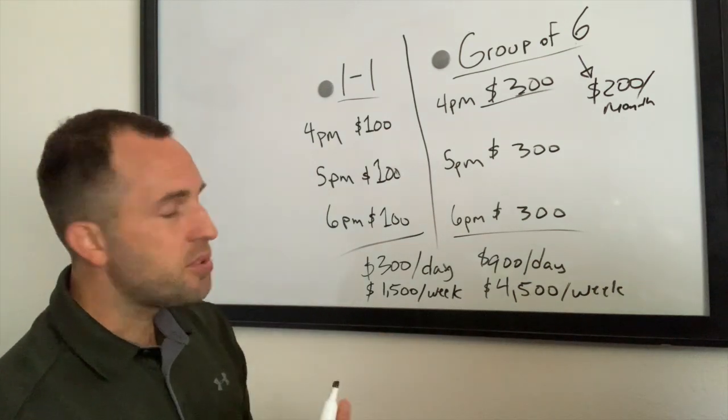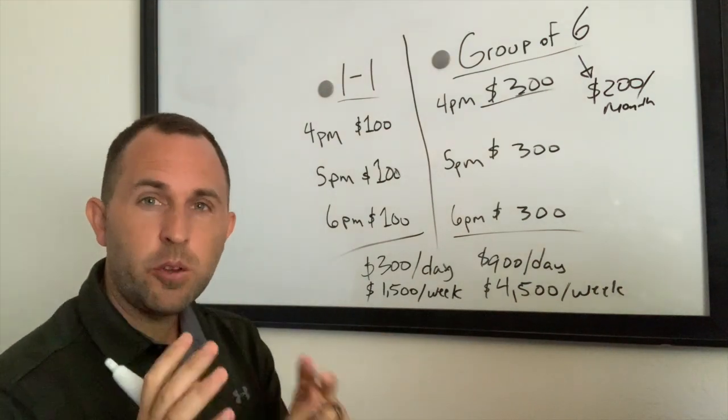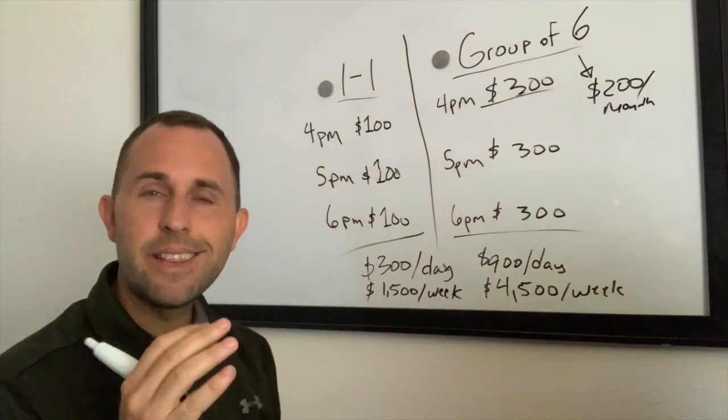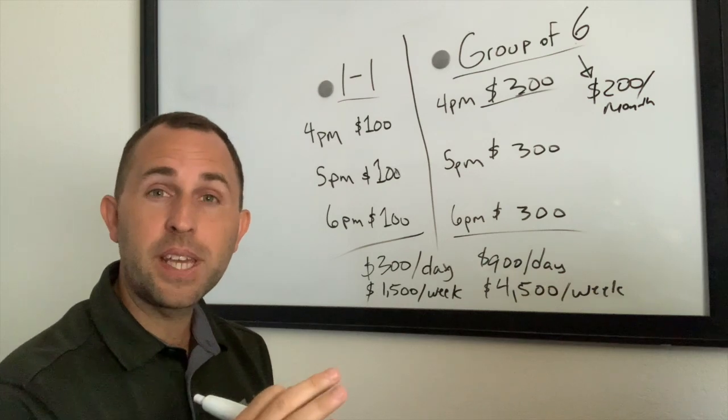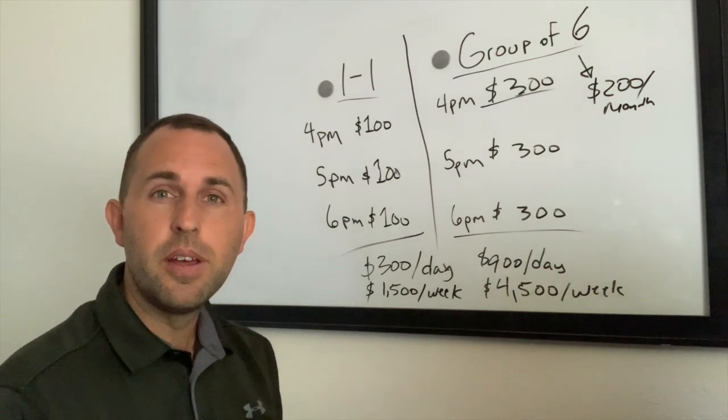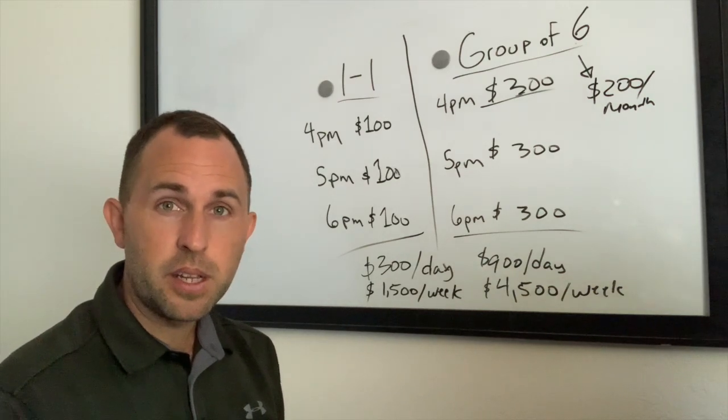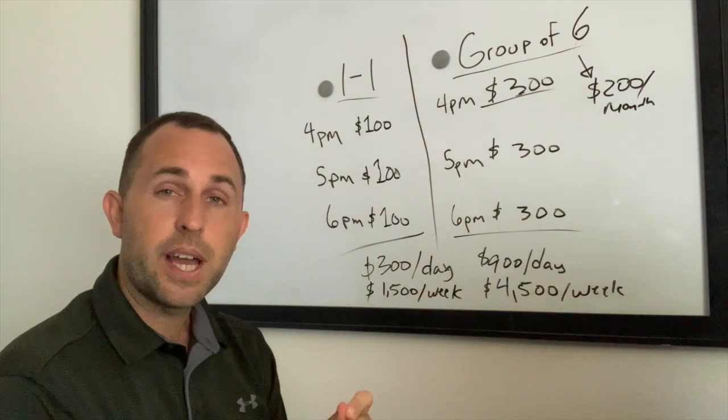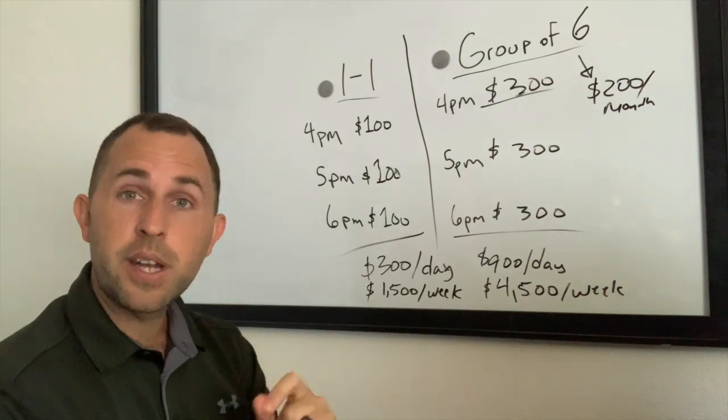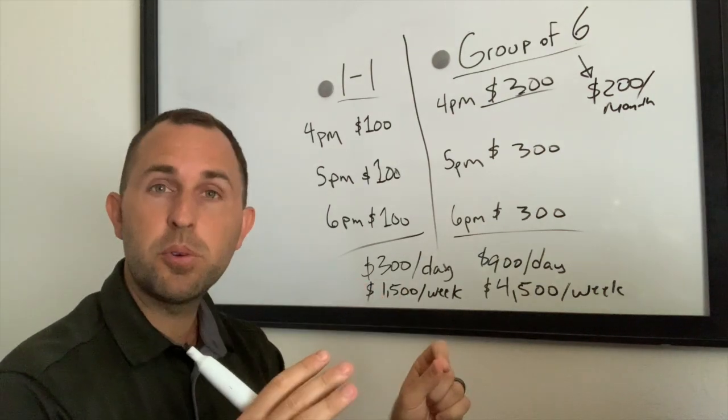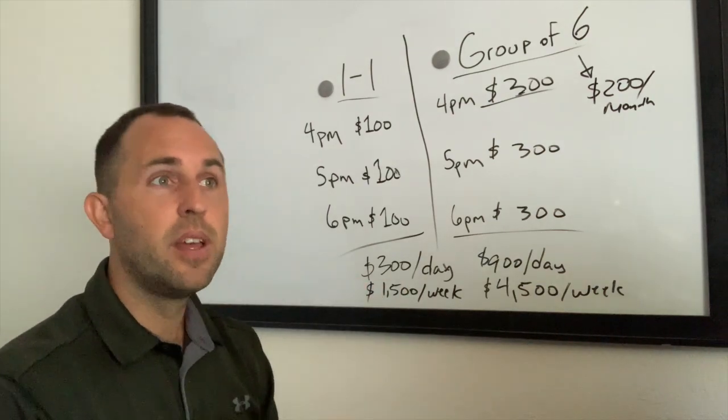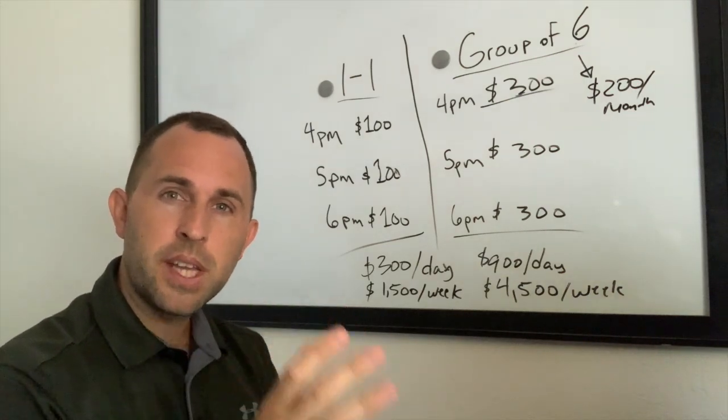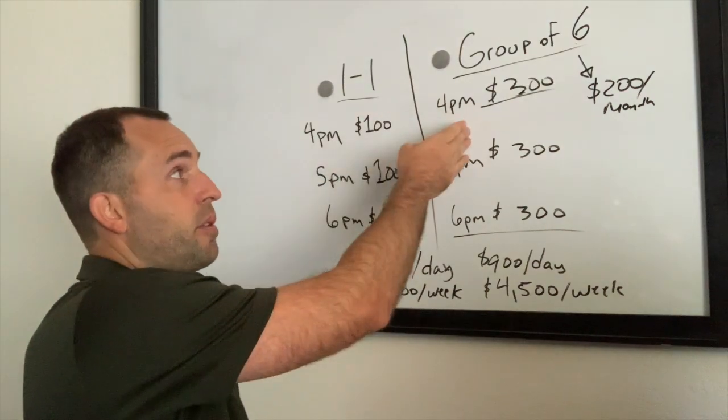Now here's the thing. You would be working equally as hard with this model as you would with this model. You're spending the same amount of time but you're making three times the amount of income. And this is why with one-on-one training there's going to be a cap with how far you can go unless you want to just grind it out and work more hours. I know a lot of people who do that. They're happy with their business, but they always get to a point of burnout.